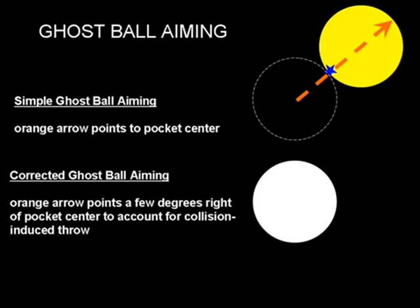So ghost ball aiming is a good starting point for any discussion on aiming at pool. There's two different flavors of ghost ball aiming, simple ghost ball aiming and corrected ghost ball aiming. In simple ghost ball aiming, you take that orange arrow and you point it through the center of the object ball to the center of the pocket. Where that arrow hits the front edge of the object ball is where the blue star is. That's the contact point on the object ball. You then imagine a phantom or ghost cue ball that's touching at that contact point. That's the ghost ball. And if you replaced the phantom cue ball with the actual cue ball, you'll probably miss the shot. And the reason is collision-induced throw from the friction between the balls will send the object ball a few degrees to the left, in this case, further downstream.